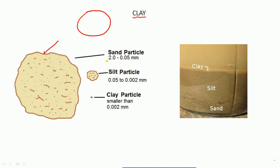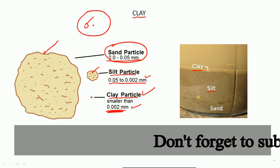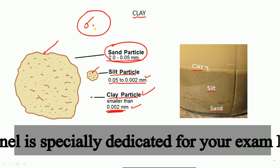Sand particles have a size of 2.0 to 0.05 mm. Within this sand particle system, there are two smaller categories: silt particles with a size of 0.05 to 0.002 mm, and clay particles which are the smallest, with a size below 0.002 mm. Sand particles collectively constitute both silt and clay.